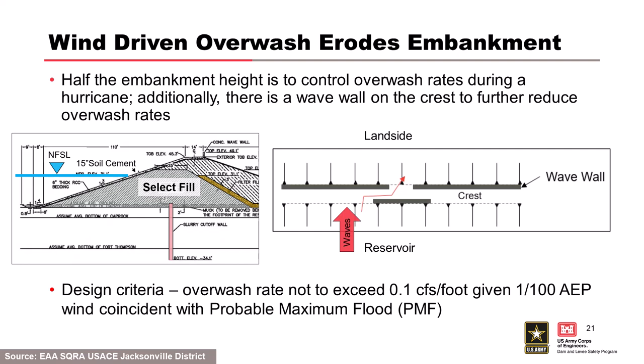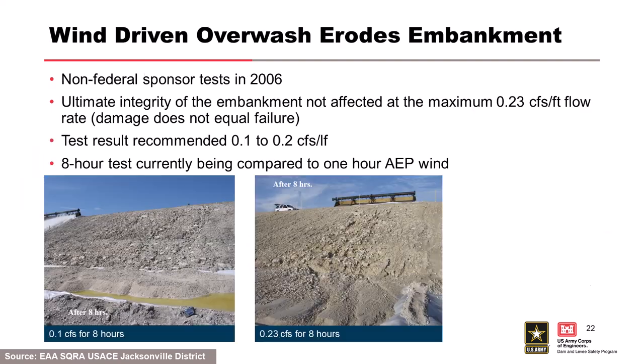What they found was almost half the embankment height is freeboard protecting against wave overwash, plus a concrete wave wall on top. Given that this embankment is miles and miles in diameter, this is not trivial earthwork. The design criteria required: an overwash rate not to exceed 0.1 cubic feet per second per foot of dam, given a coincident one-in-100 annual exceedance probability wind event at the same time as the peak of the probable maximum flood — meaning, for this off-river reservoir, the PMP centered directly over it.